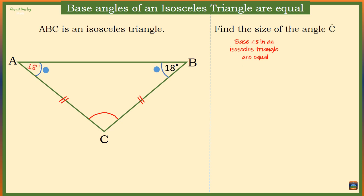So 18 degrees plus 18 degrees plus angle C should be 180 degrees. This is because the sum of angles in any triangle is 180 degrees.